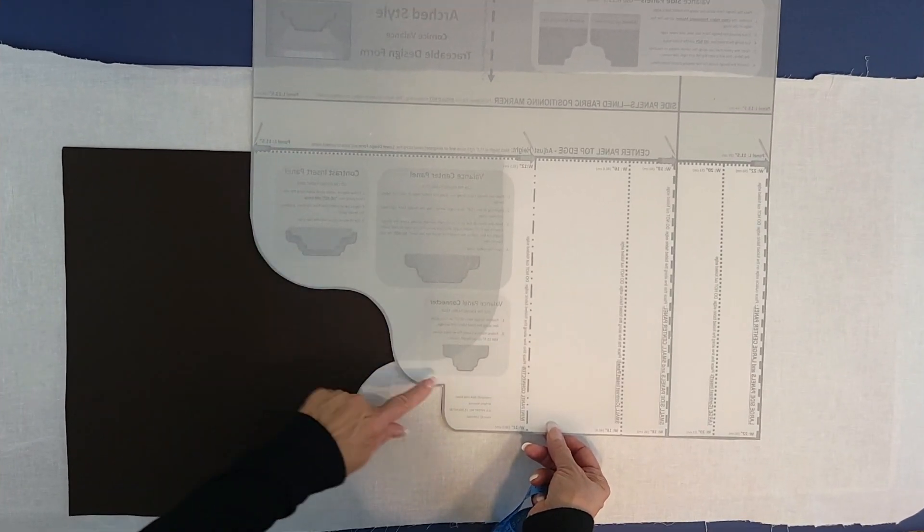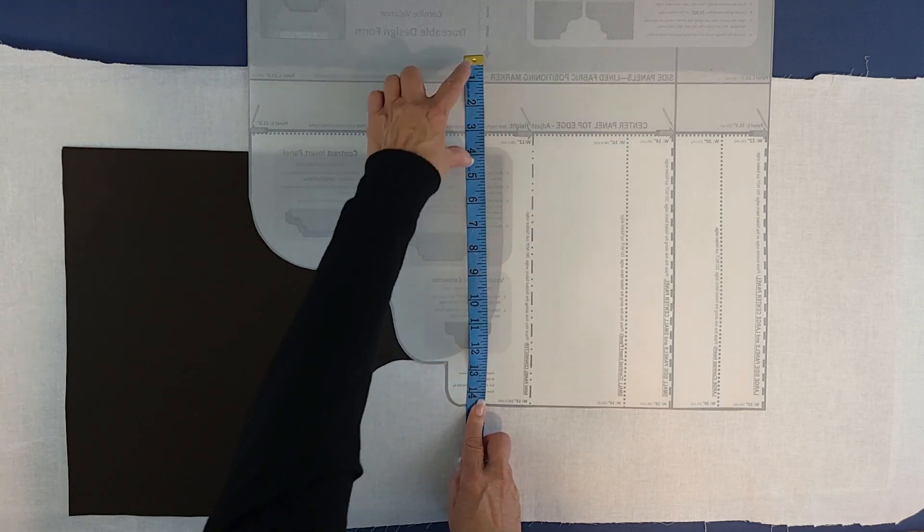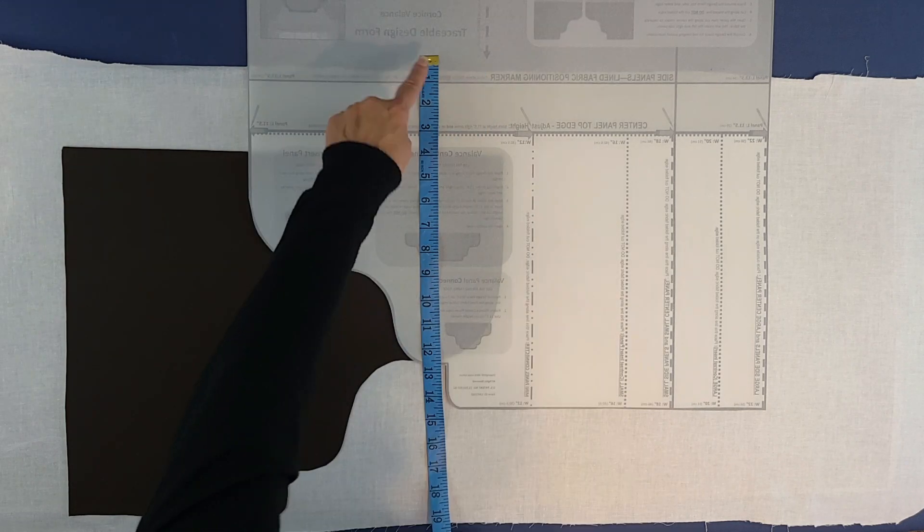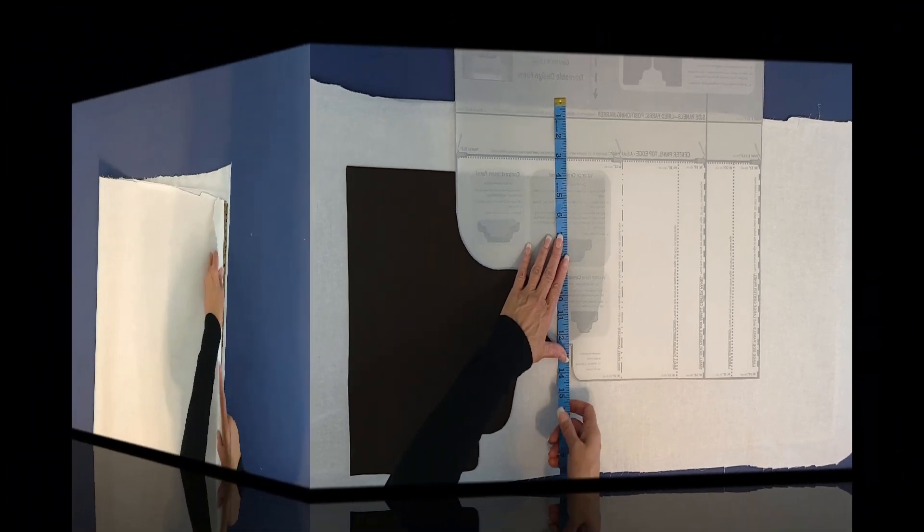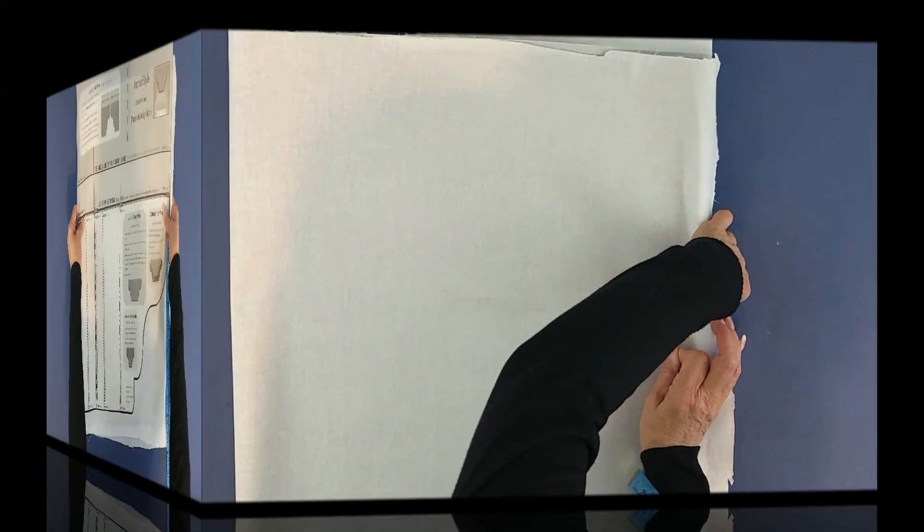If you're planning to make a panel that hangs longer below the lower curve or second curve, make sure you add that depth before tracing your panel. Now fold your fabric section in half with the lining side facing out and pin to secure.